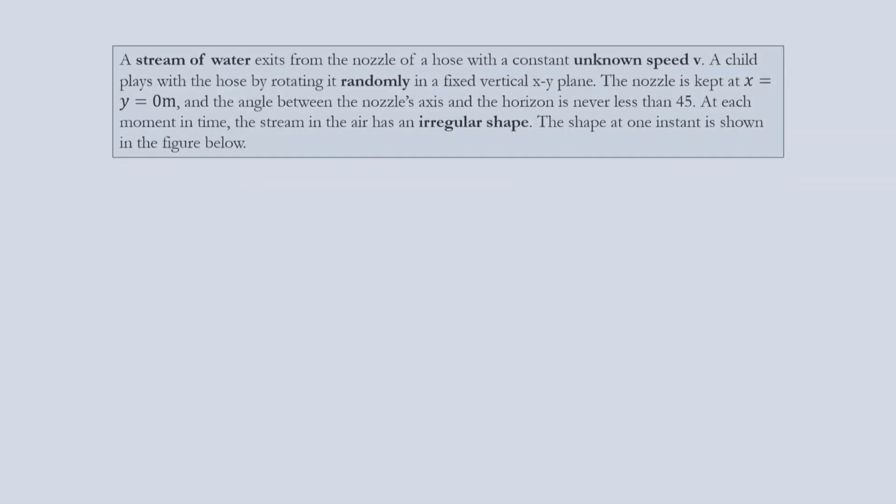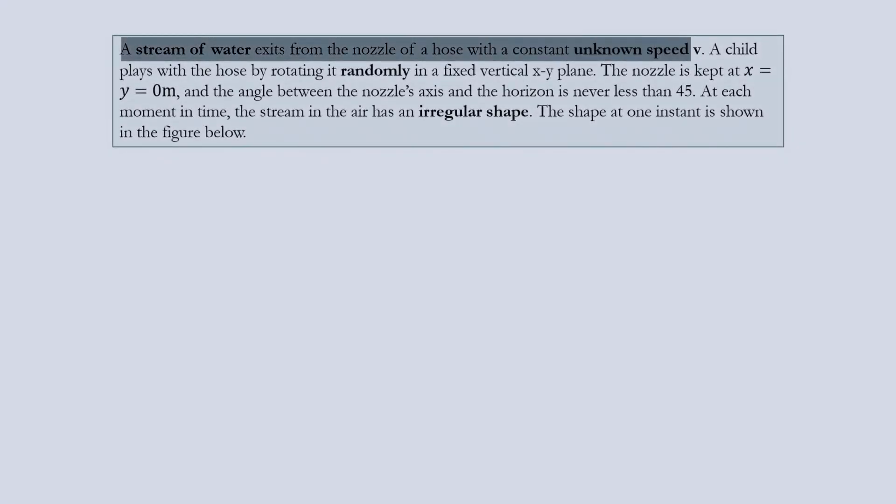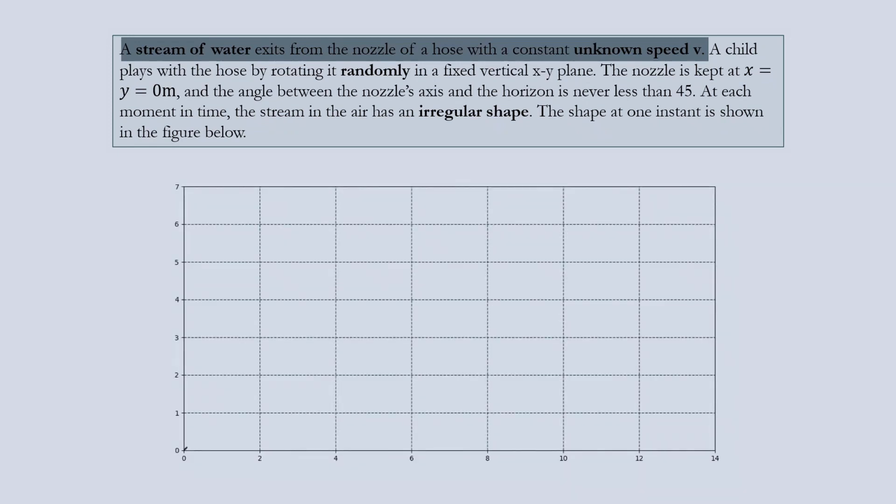The problem text goes like this. A stream of water exits from a nozzle of a hose with a constant unknown speed v. As we are reading this, it would probably be useful to draw a coordinate system and imagine what this would look like.